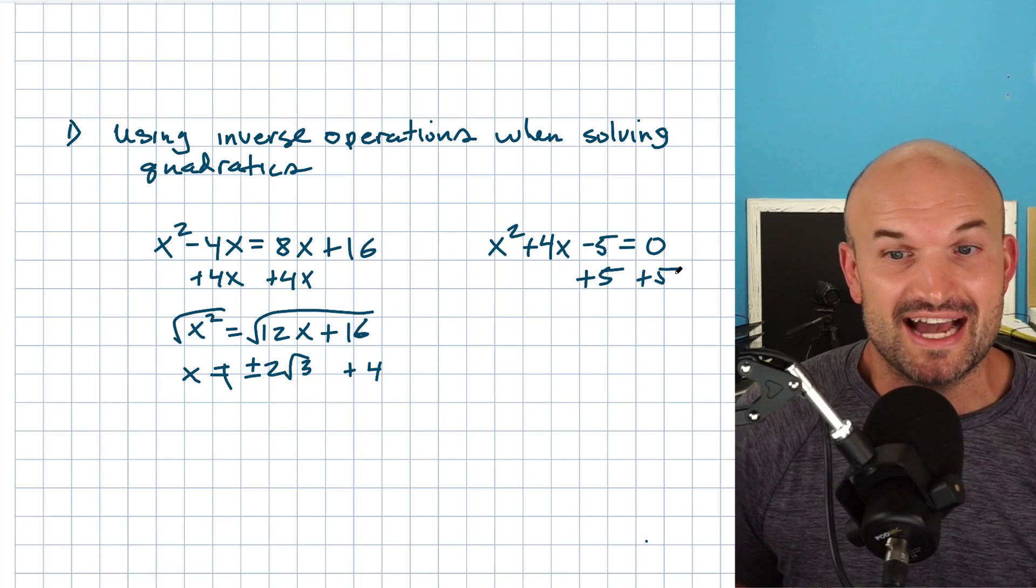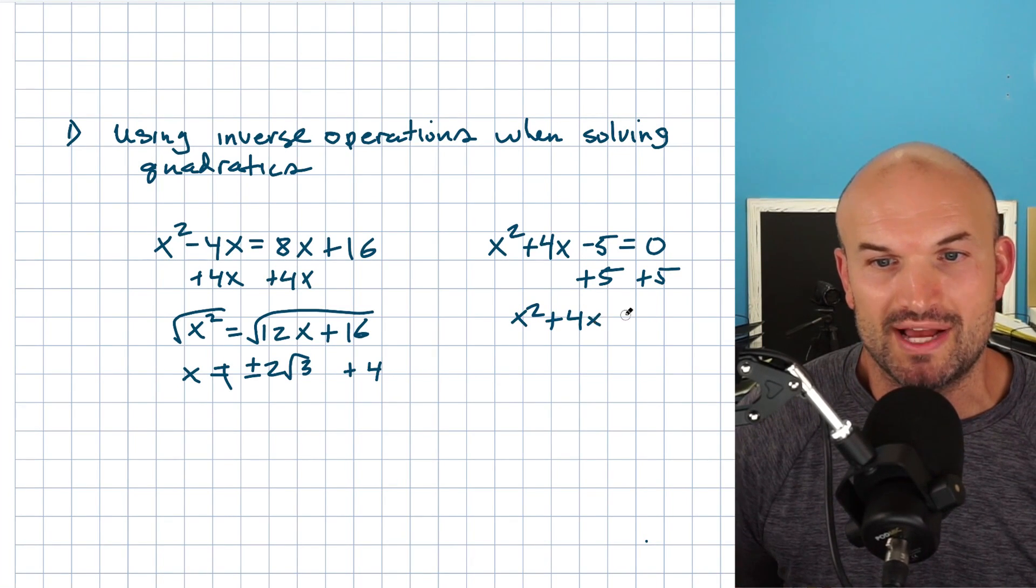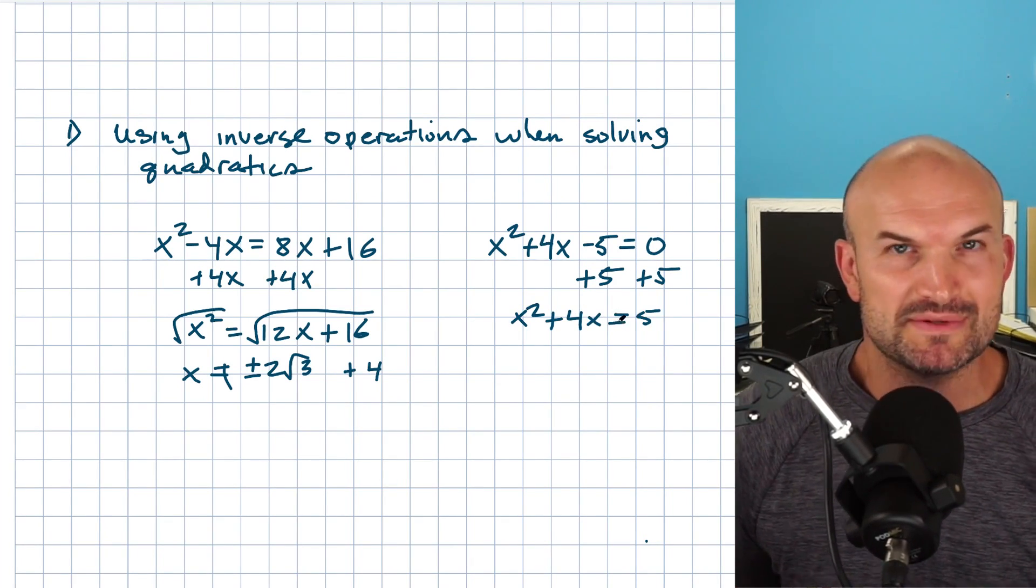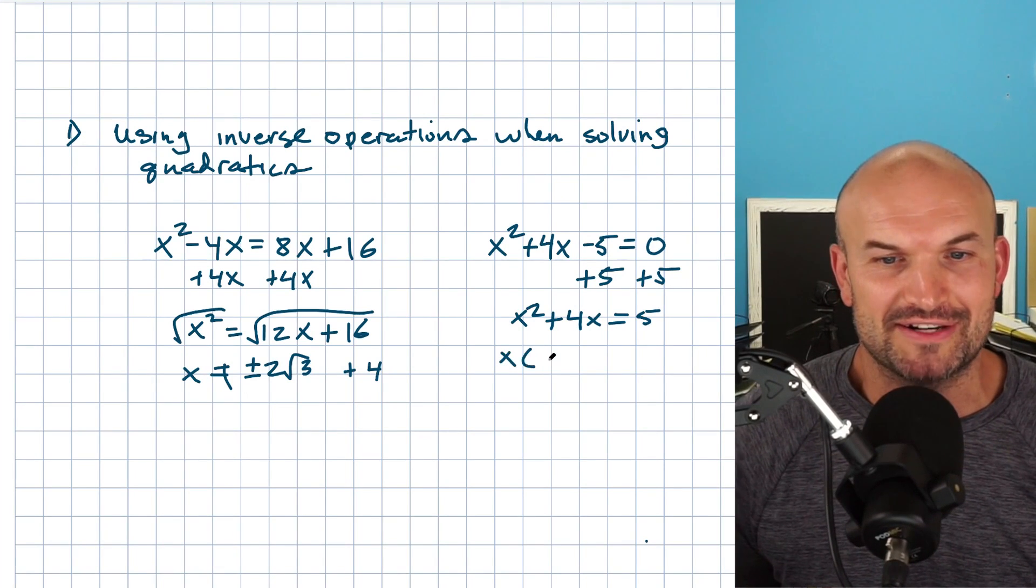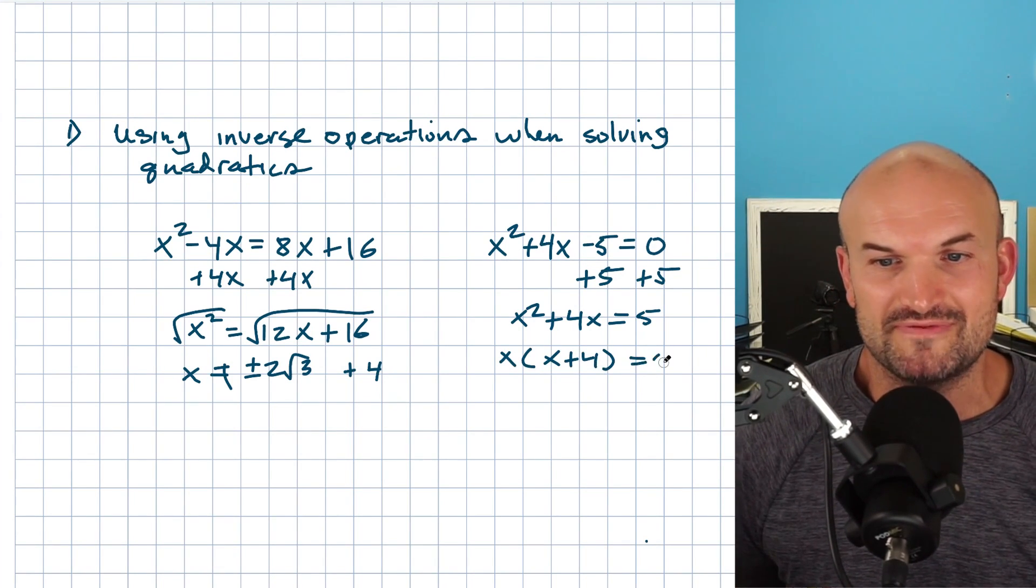they'll say like, oh, let me go and get the five all by itself. And then I get an X squared plus a four X equals five. And then they say, oh yeah, I'm supposed to factor or something like that. So let's factor out an X.